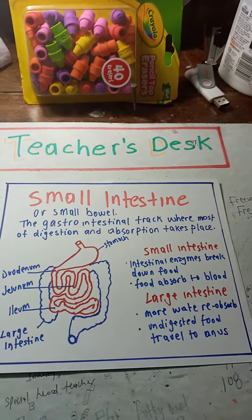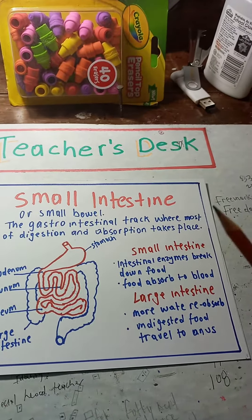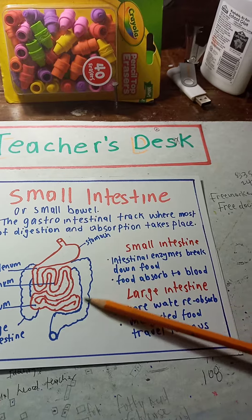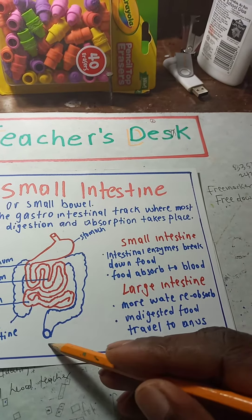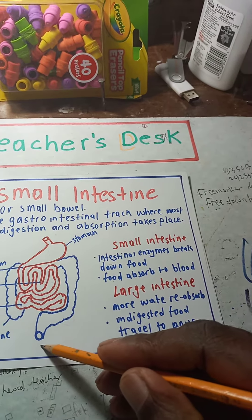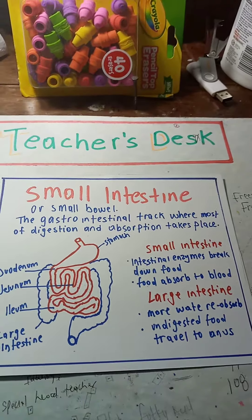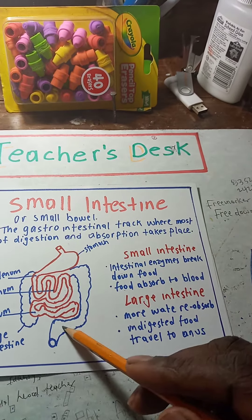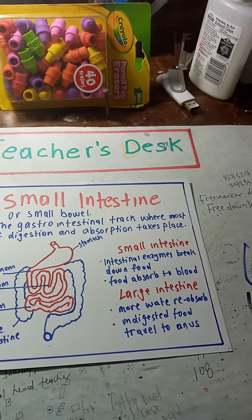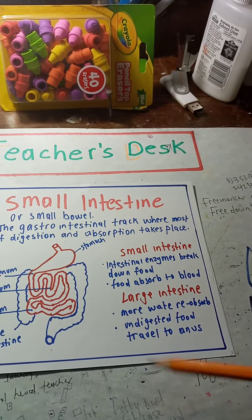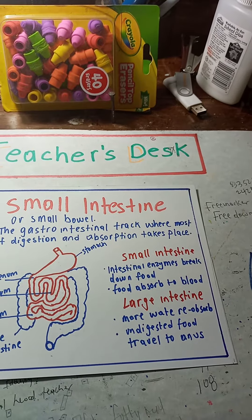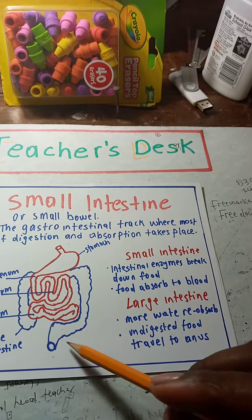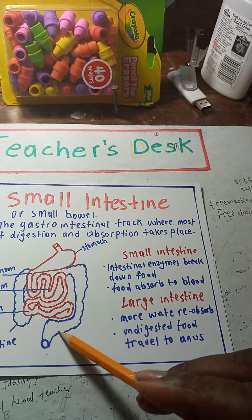The undigested food, which we call the waste, goes into the large intestine and comes out at the anus. Reabsorption takes place in the large intestine, where water and salt are reabsorbed.